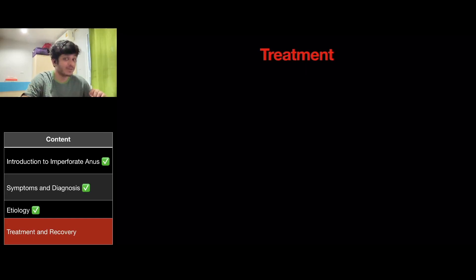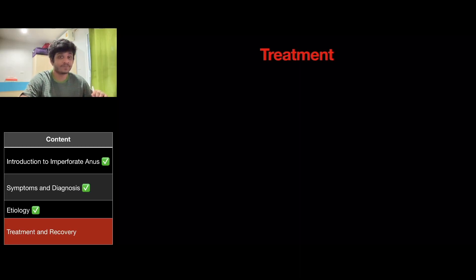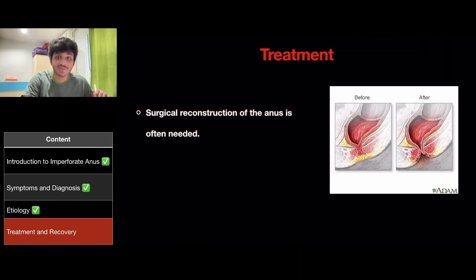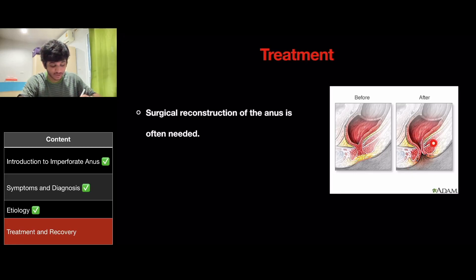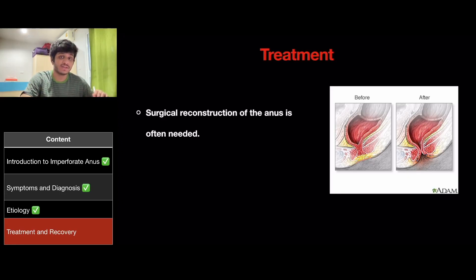Let's move on to the treatment of this disease. The infant should be checked for other problems, especially those affecting the genitals, the urinary tract, and the spine. Surgical reconstruction of the anus is often required. You can see the diagram on the right, where the anus is reconstructed. If the rectum connects with other organs, repair of these organs will be necessary through abdominal surgery.